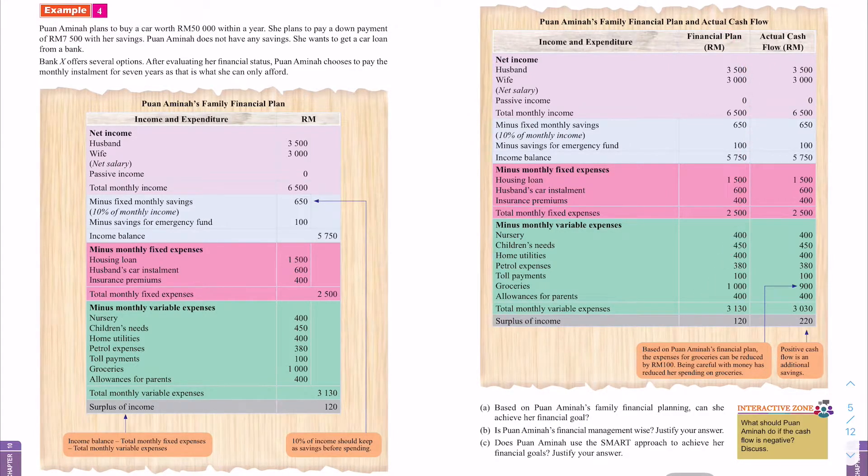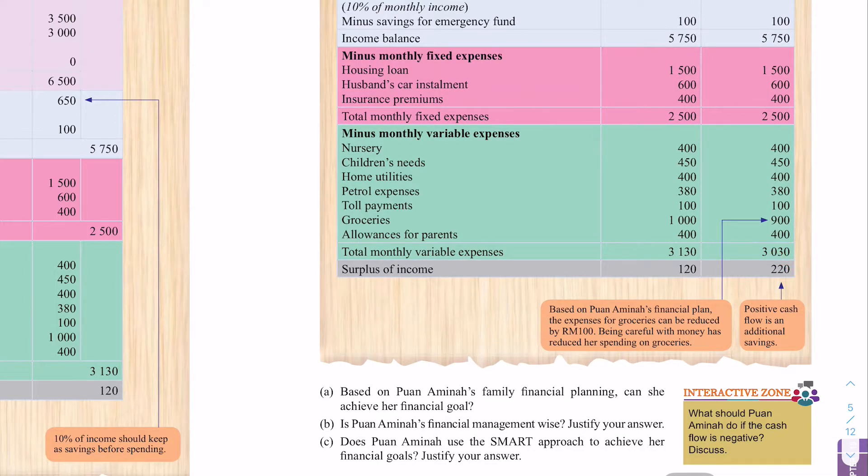So, benda yang sama. Tapi, ini tadi adalah financial plan dia. Ini planning bagi Puan Aminah. Sekarang, kita cuba compare dengan actual cash flow dia. So, the first part. Ini samalah. Tak ada perbezaan. Fixed income pun. Sorry. Fixed expenses pun sama. Sebab dia fix kan. Dia tak ada perubahan. Tetapi, dia boleh ubah pada monthly variable expenses. Contoh, nursery sama. Children need sama. Sini dia ubah pada groceries. Plan dia tadi, groceries dia nak belanja seribu. Tapi, actual dia dapat berjimat 100. So, dia hanya belanja 900. So, di sini kita boleh tengok. Surplus income dia meningkat sebanyak 100. Sebab dia berjaya menjimatkan 100 ringgit. So, daripada sini, walaupun baki duit di 220. Tapi, itu tetap dipanggil positive cash flow. So, dia boleh tambah dalam simpanan.